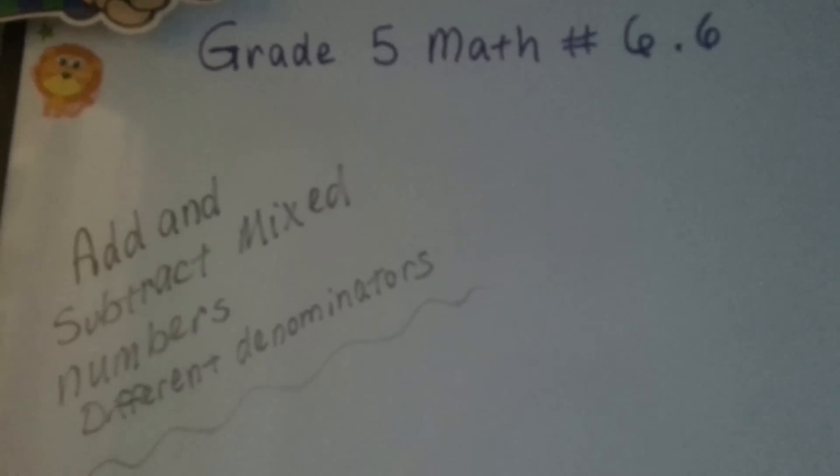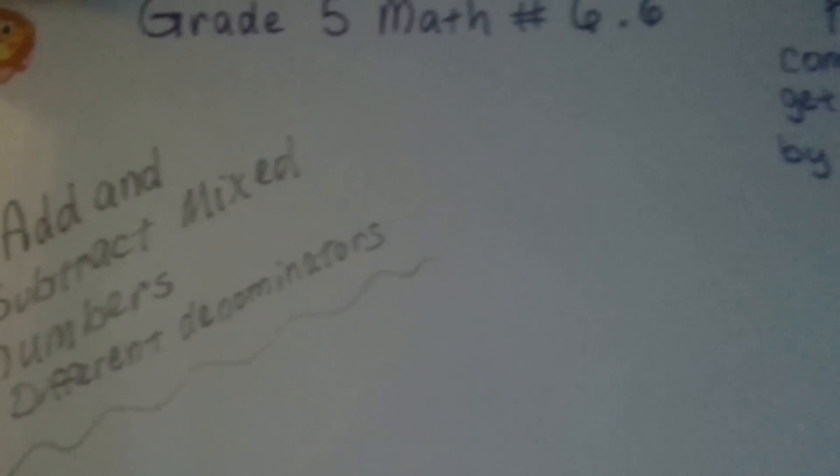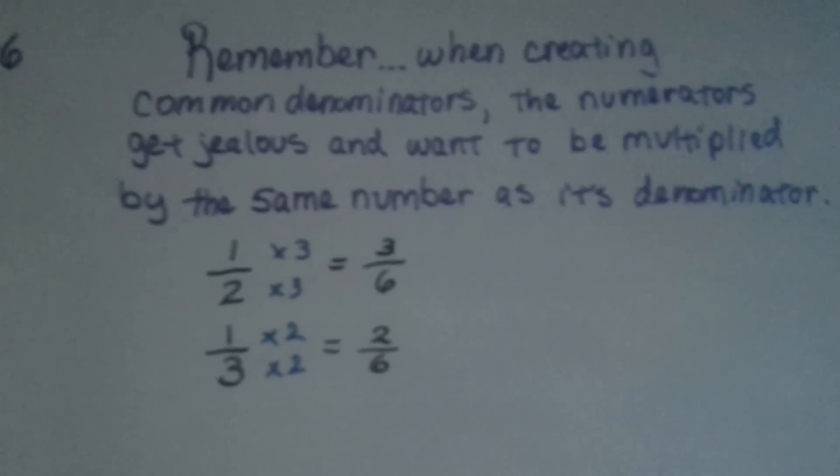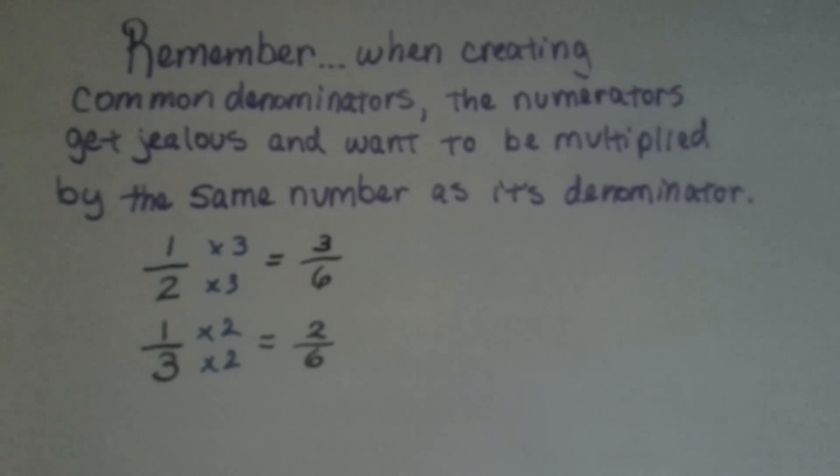Grade 5 math number 6.6, add and subtract mixed numbers with different denominators. Remember, when creating common denominators, the numerators get jealous and want to be multiplied by the same number as its denominator.